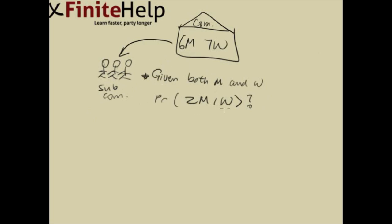We want to find the probability that this subcommittee is two men and one woman. So essentially, it's asking the probability of two men and one woman, given both men and women.